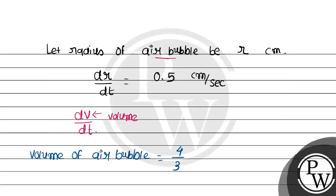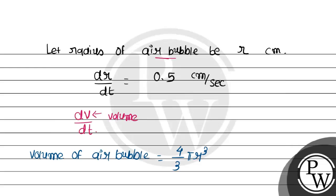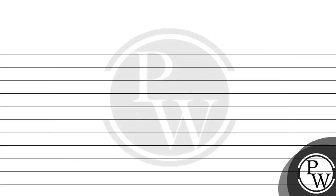So the volume of the sphere is 4/3 pi r cubed. Now we need dV/dt. So we need to differentiate with respect to t. That means dV/dt.